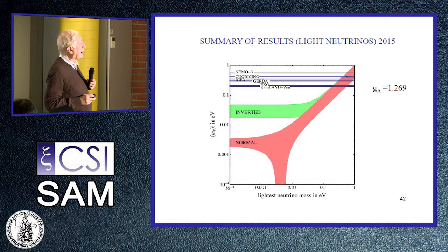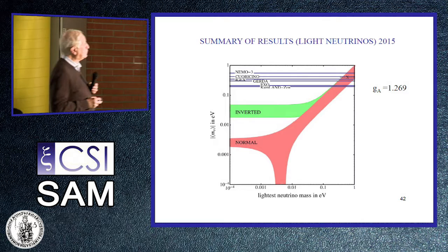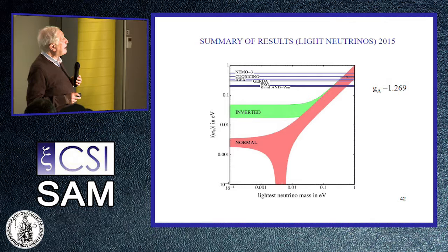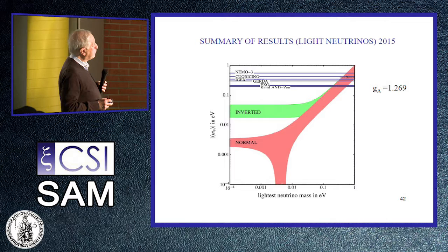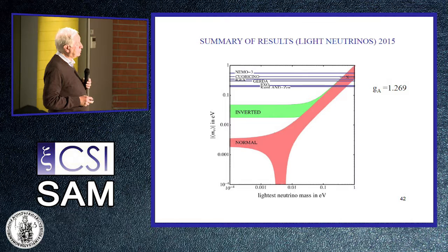This graph shows the expected values for inverted or normal hierarchy based on oscillation experiments that measured mass differences and mixing angles theta-12, theta-13, and theta-23. Including the Daya Bay result from two years ago, we can see that the claim by Klapdor-Kleingrothaus, although still consistent with degenerate masses, is now excluded by GERDA, EXO, and KamLAND-Zen to four or five sigma deviations. Klapdor-Kleingrothaus is now essentially excluded.